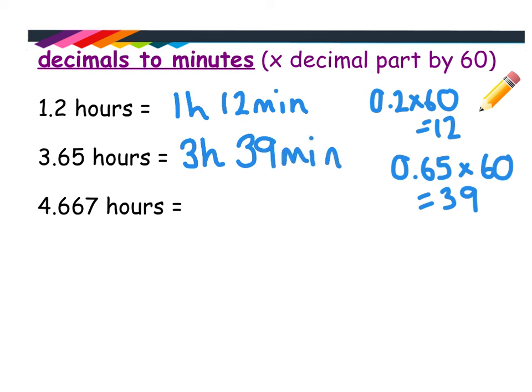And for the last one, 4.667, you know that that's 4 hours something. You do 0.667 times 60. And this one does not give you an exact number. It gives you 40.02. So we're going to just take that as 40 minutes because 40 minutes would have been 0.66666, so filling your calculator with 6s. So at some point, this probably has been rounded. So we'd say that that is 4 hours, 40 minutes.